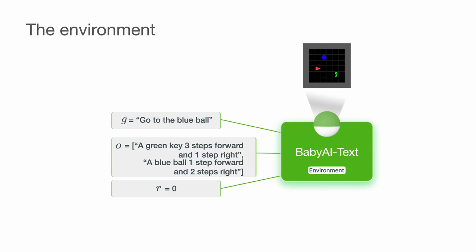An example of a task could be go to the blue ball in a room that includes distractor objects such as a key or a box.